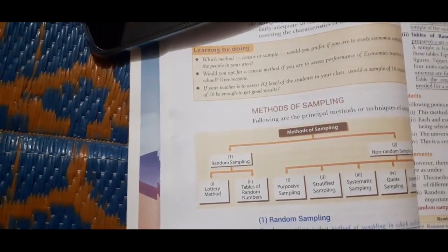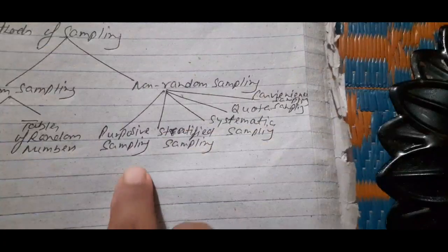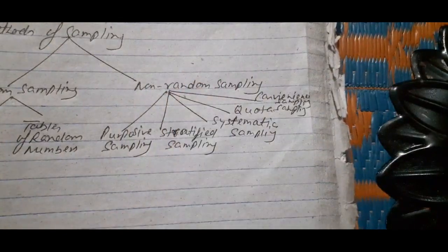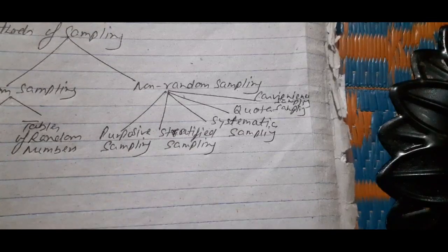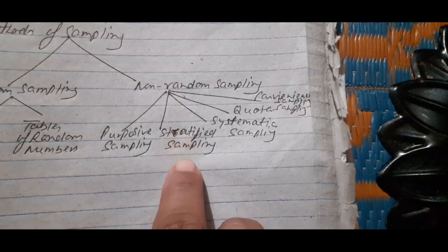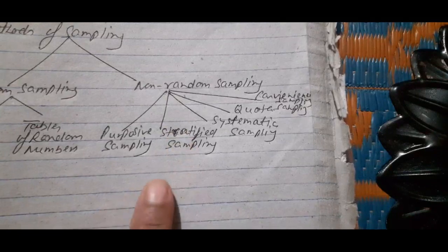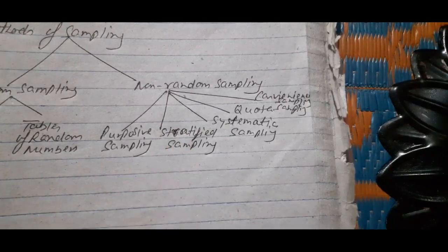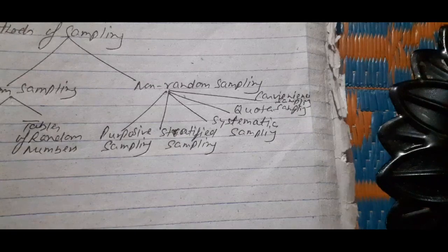Non-random sampling includes all those methods in which all units of the population do not have equal probability of being selected. Purposive sampling is that method in which the investigator himself makes the choice of sample items which in his opinion are the best representatives of the universe. Stratified sampling, also called mixed sampling, is a method under which the population is divided into different strata having different characteristics, and some items are selected from each stratum so that the entire population gets represented.